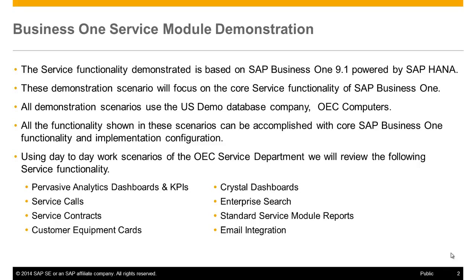In the following two role-based scenarios, we will review the following Business One service module functionality: pervasive analytics dashboards and KPIs or key performance indicators, Crystal dashboards, service call functionality, enterprise search, service contracts, and standard service module reports.